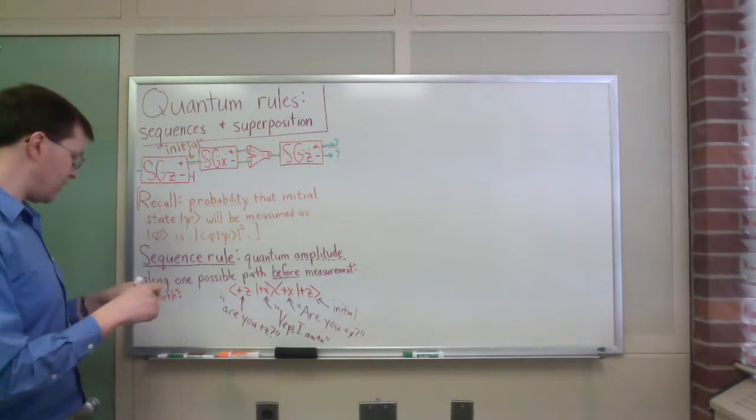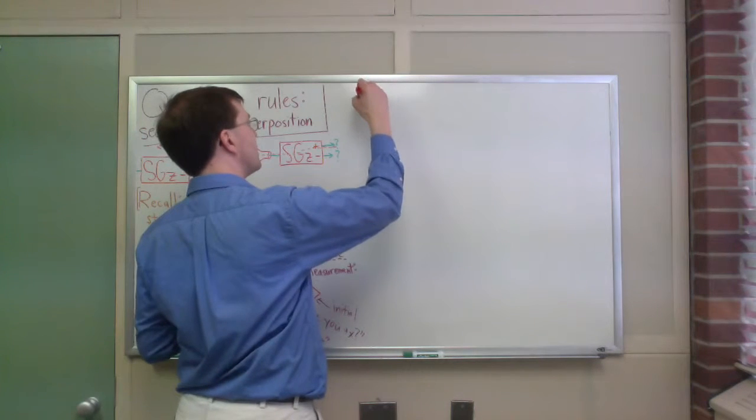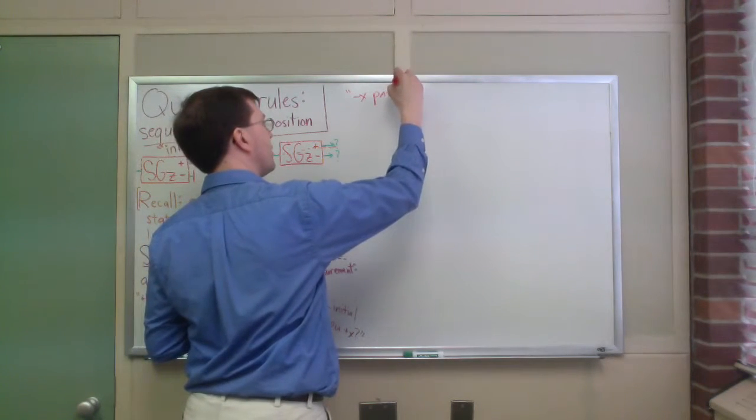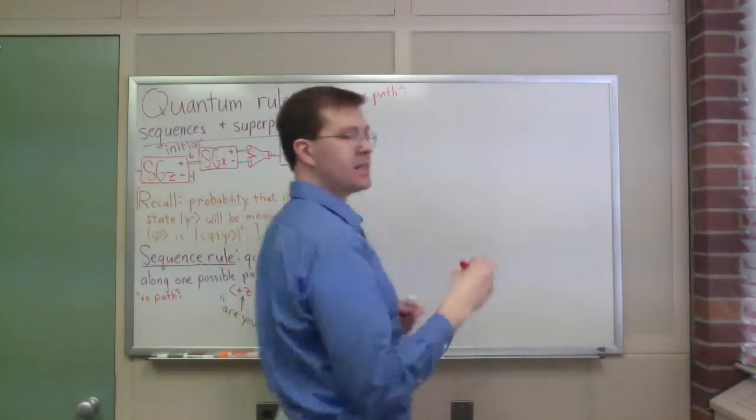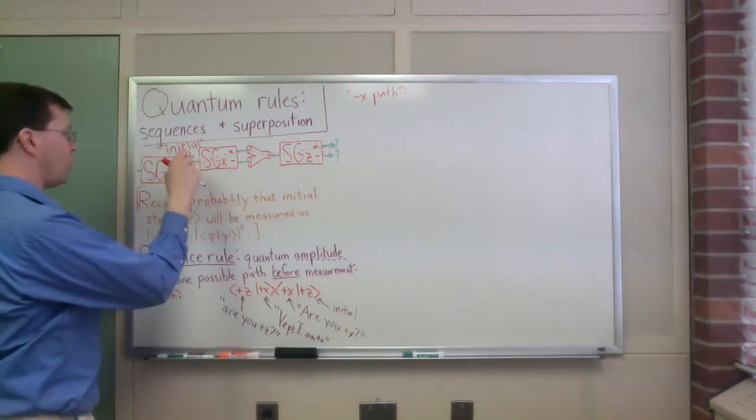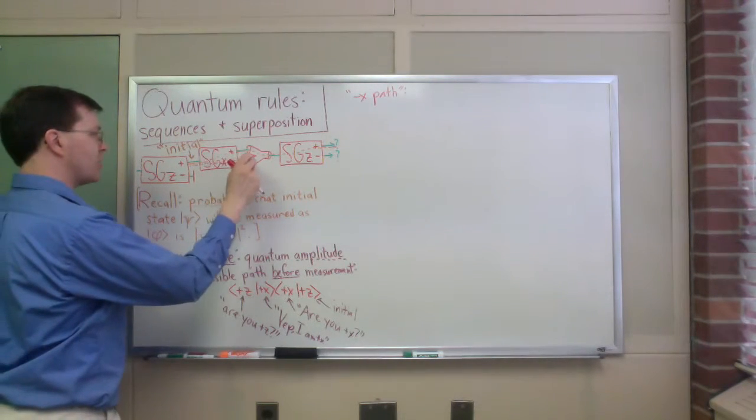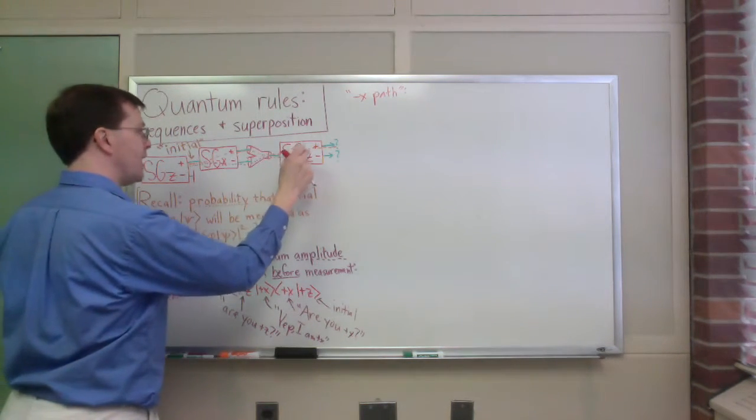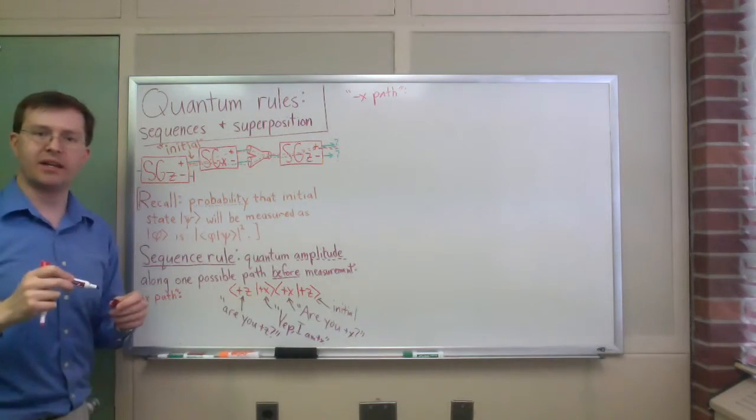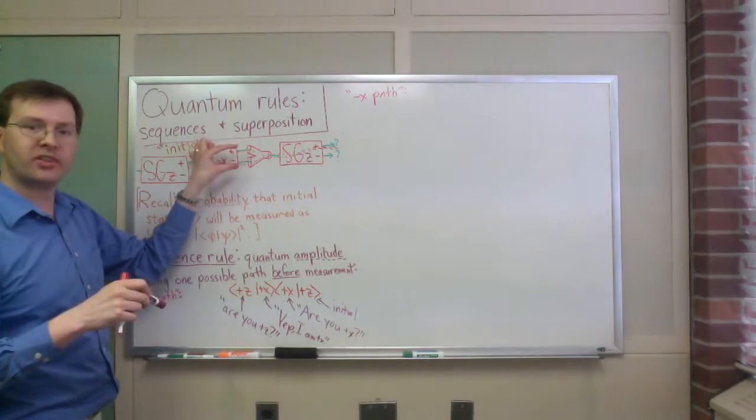I could do the same thing for the minus x path. Let me do that over here. For the minus x path, same idea, the minus x path is the one that would go from my initial state here to the minus path back to recombine, and I'm still going to ask if it's plus z in the end. So you can see the deviation that's spreading out is only along this, right after the SGx device.